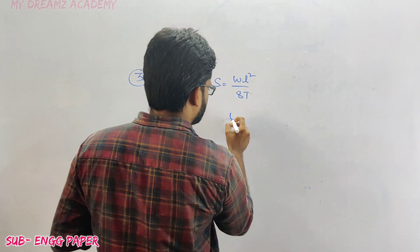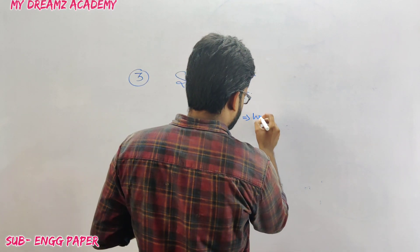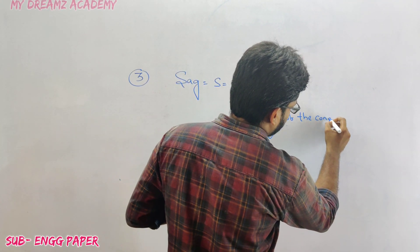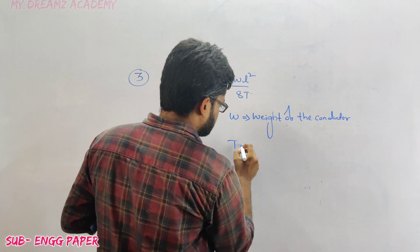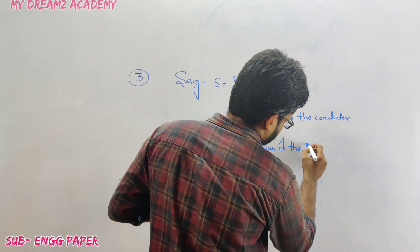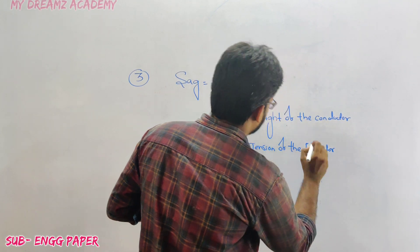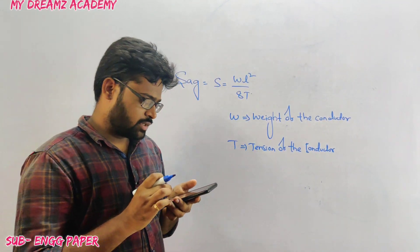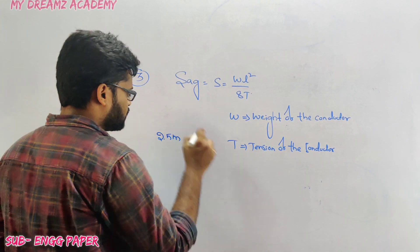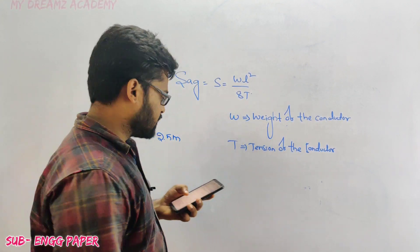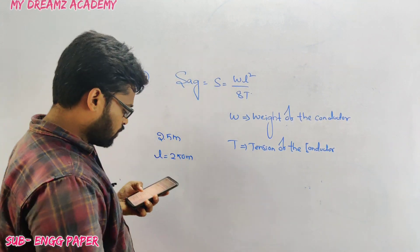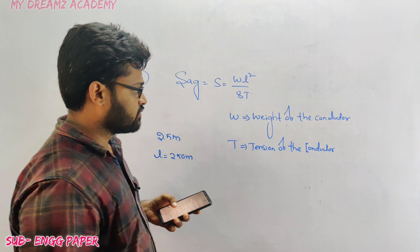In the sag formula S = ωL²/8T, ω is the weight of the conductor, L is the span length, and T is the tension of the conductor. Reading the question: the sag of conductors of a transmission line is given as 2.5 meters when the span L equals 250 meters.